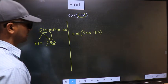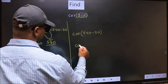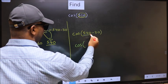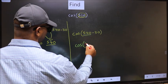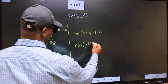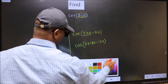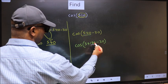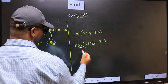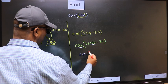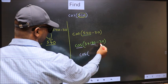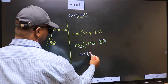Next, cos. Now in place of 540, we should write 3 × 180 minus 30. Next, here we have 180. So, cos is not going to change. It will remain cos. And inside, we get this angle 30.